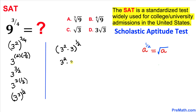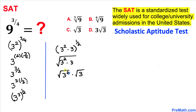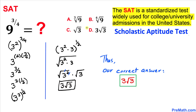This can be written as the square root of (3 power 2 times 3). We can split this into the square root of 3 power 2 times the square root of 3. The square and square root undo each other, so we simply get 3 times the square root of 3. Our correct answer is choice D: 3 times square root of 3. Thanks for watching and please don't forget to subscribe for more exciting videos!